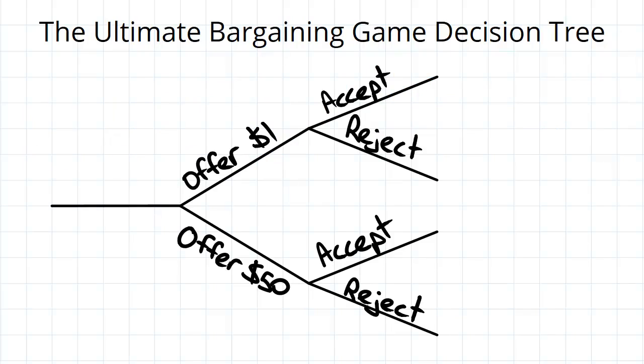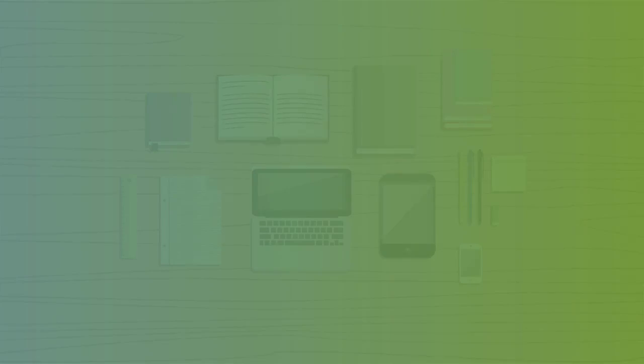The decision tree could show that player one can offer one dollar, two dollars, three dollars, and so on.